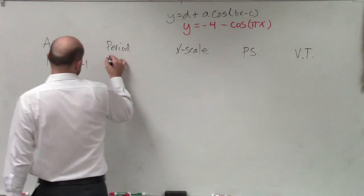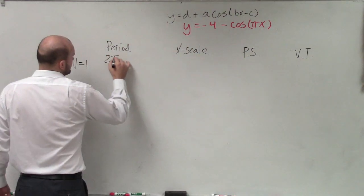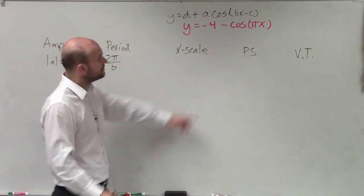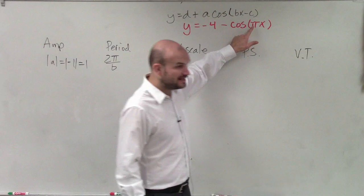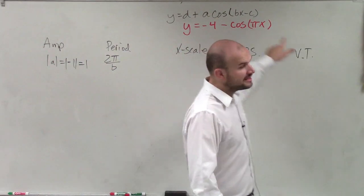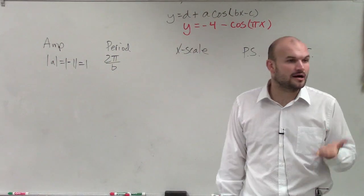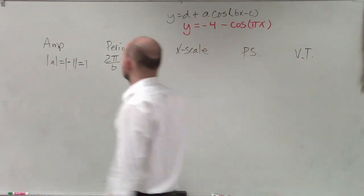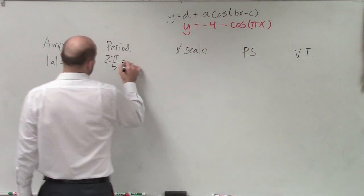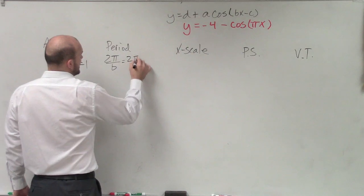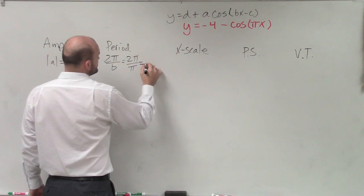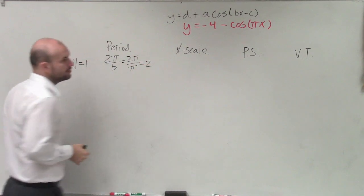The next is the period, which is 2π divided by b, where b is going to be your coefficient of your x — which in this case is π. So that's 2π divided by π, which equals 2.